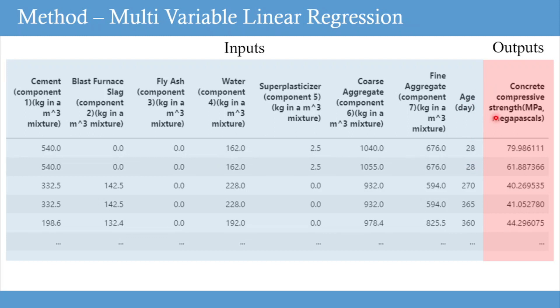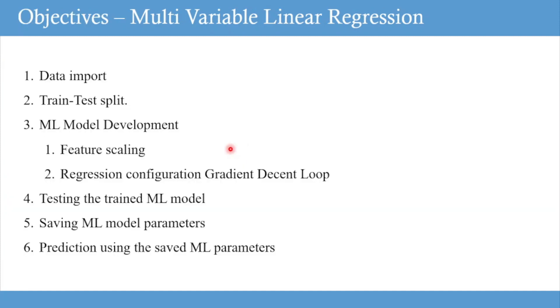Concrete strength is the only output variable, and all the remaining are input features. By the end of this project, you will learn in detail about every step involved in multi-variable linear regression, starting from data import, train-test split, and ML model development.